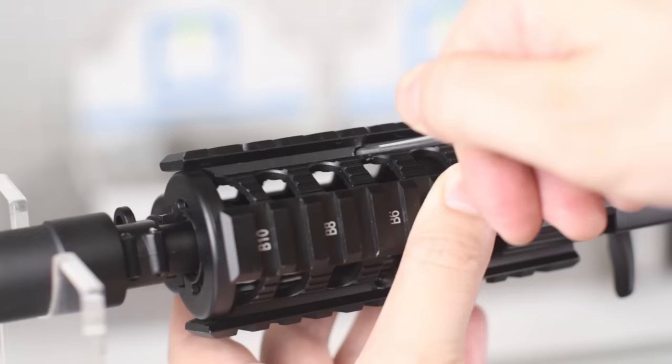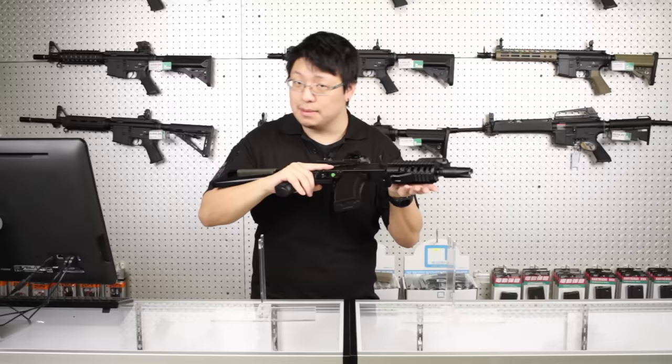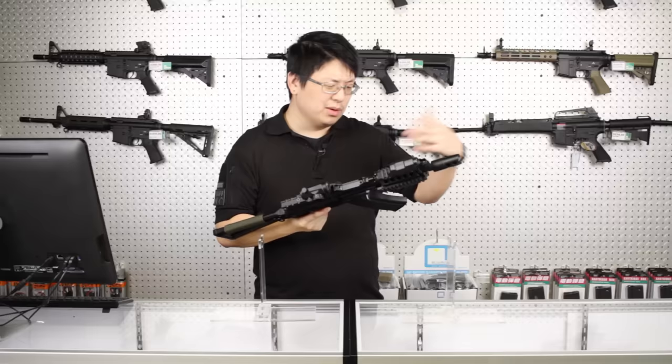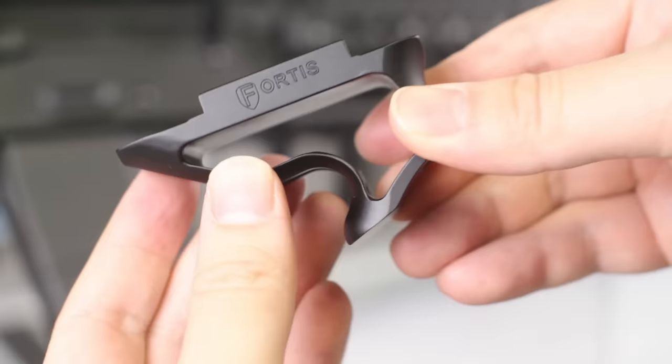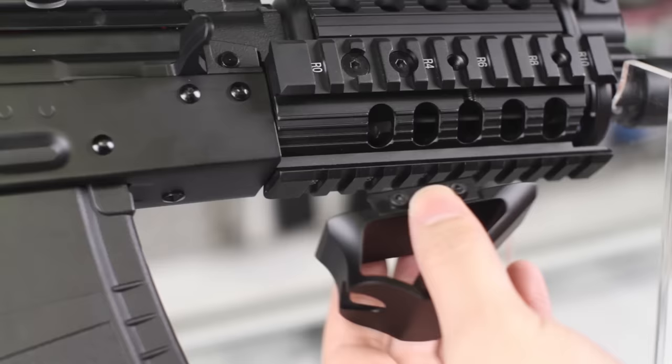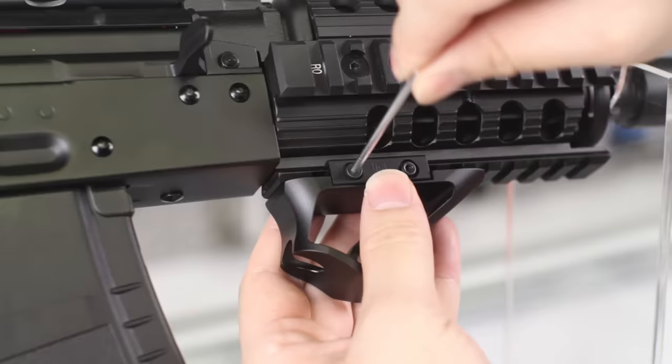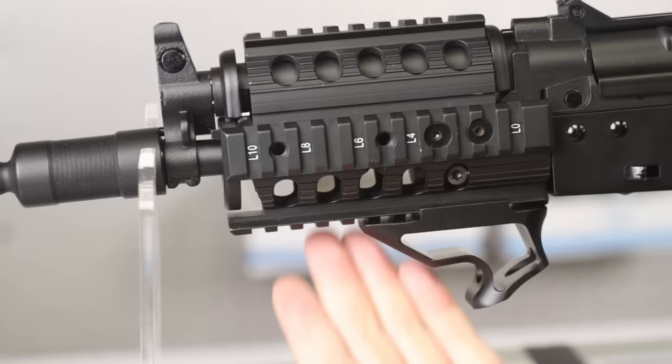With standard Picatinny rail, there are of course many different options for a foregrip, but with the metal sight mount already adding quite a bit of weight, we were looking for somewhat of a lightweight solution. When you're shopping for an AK grip, make sure it's not too tall as to block the magazine removal. We settled on the Fortis-style short grip, which also comes in a key mod version. Mounted towards the back of the rail, it gives adequate room for the rest of your fingers and is really quite comfortable.